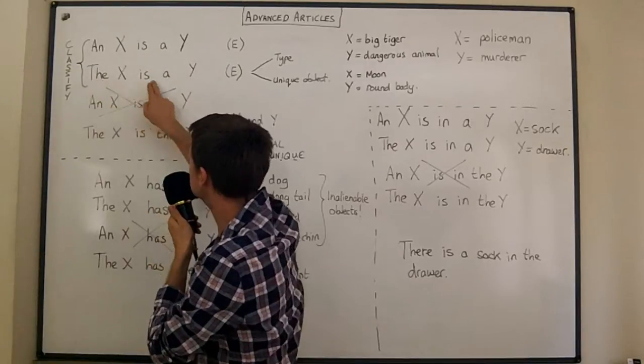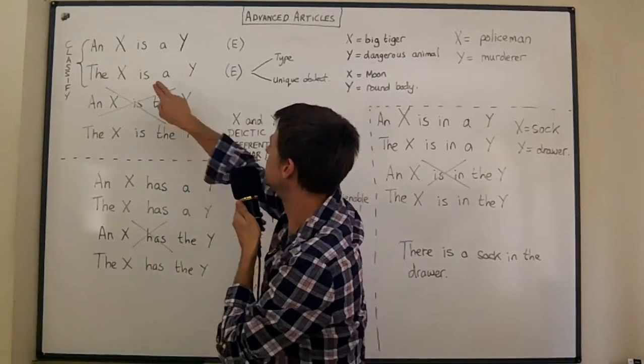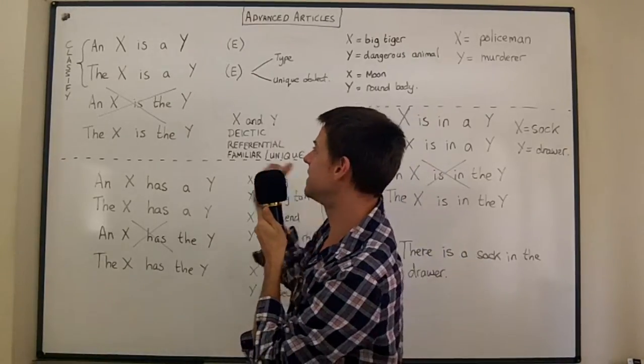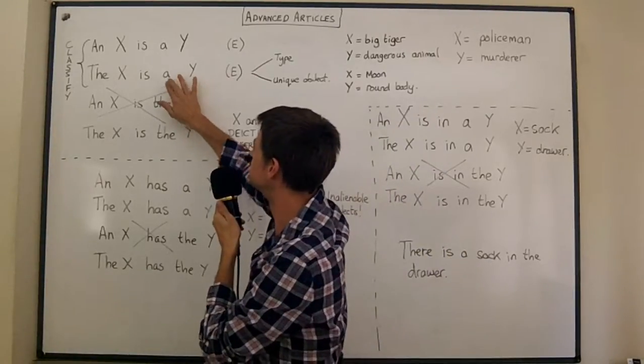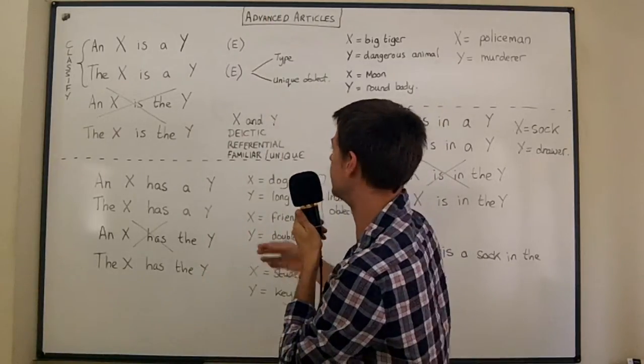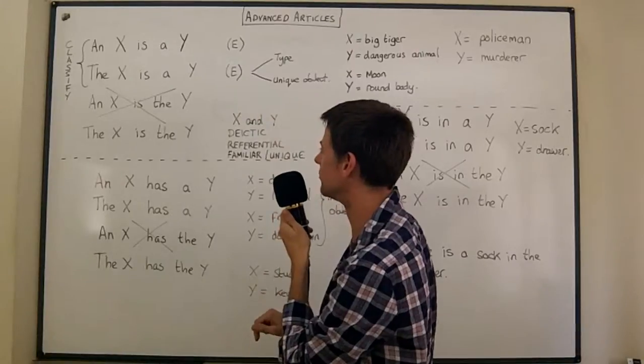A moon is a round body. The moon is a round body. And we'd usually say this to describe the moon. If we're giving it attributes we're saying that the moon, our moon, is a round body. We're describing that moon and it's an existential clause.